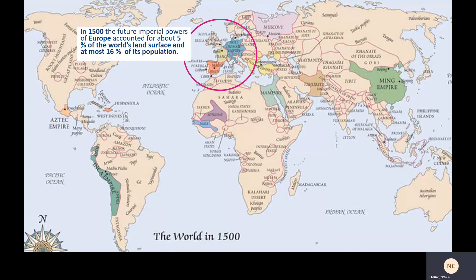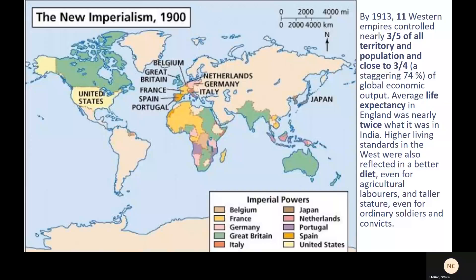To give an example of how big this change is, here's a passage from Niall Ferguson's 'The West and the Rest.' In the year 1500, the future imperial powers of Europe accounted for about 5% of the world's land surface and at most 16% of its population. By 1913, 11 western empires controlled nearly three-fifths of all territory and population of the globe and close to three-fourths — a staggering 74% — of global economic output.